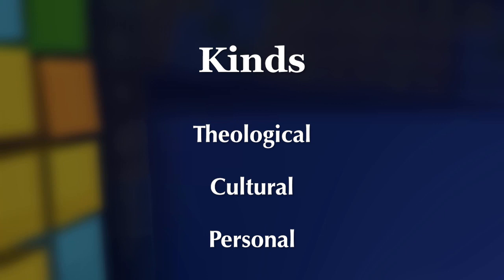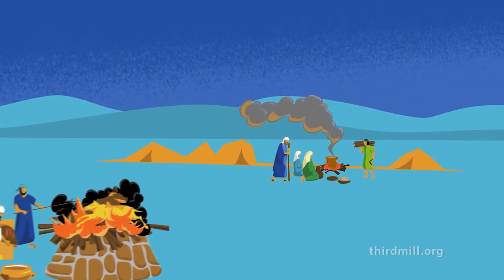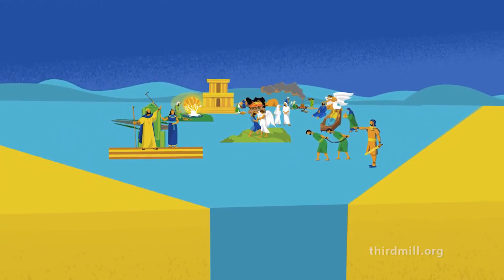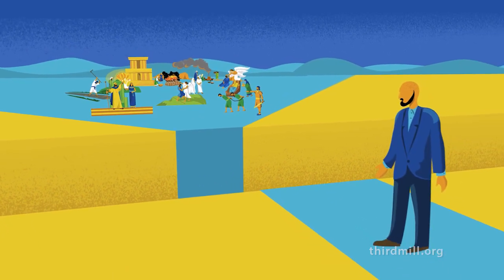Having considered how theology and culture in the Old Testament often seem strange to us, we should look at a third kind of distance — what we may call personal distance. When we speak of personal distance, we refer to the fact that the people who lived in the days of the Old Testament were different from modern people. Many of the gaps involve personal, human factors. Of course, the people of the Old Testament were not entirely different from us, and as we'll see later in this lesson, they were similar to us in a number of important ways. But at the same time, they had strikingly different personal experiences. We shouldn't be surprised, since many of their dispositions and activities grew out of the theological and cultural world in which they lived.